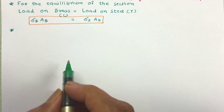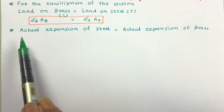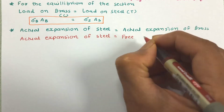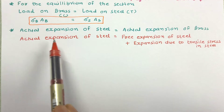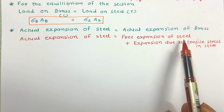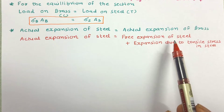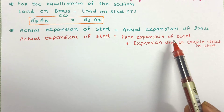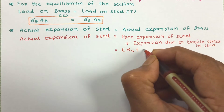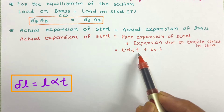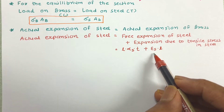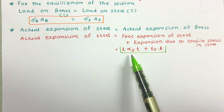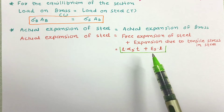Now let us apply the compatibility equation. From compatibility, the actual expansion of steel equals the actual expansion of brass. The actual expansion of steel equals the free expansion of steel plus additional expansion due to tensile stress in steel. Free expansion is given by l·α·t, and expansion due to tensile stress equals strain times original length, i.e., εs · l.